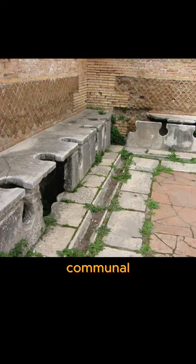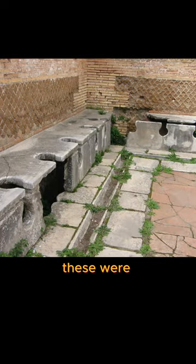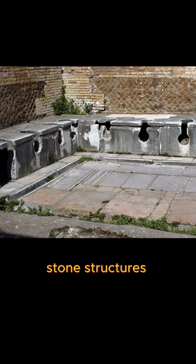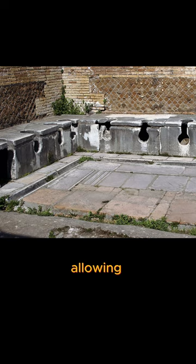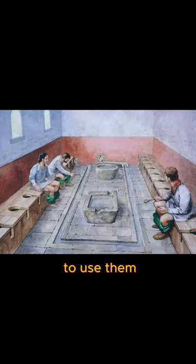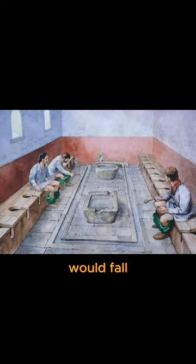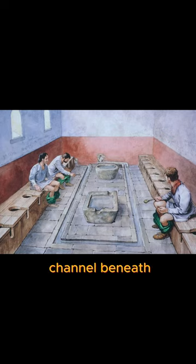This is ancient Rome's communal public toilets, called latrines. These were large stone structures with multiple bench-style seats, often without dividers, allowing several people to use them simultaneously. Waste would fall into a running water channel beneath, which helped flush away the waste.